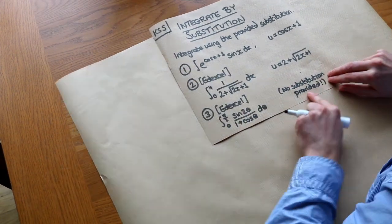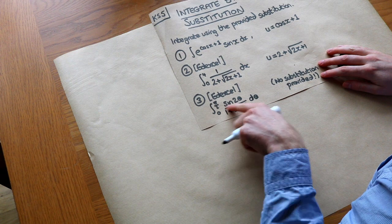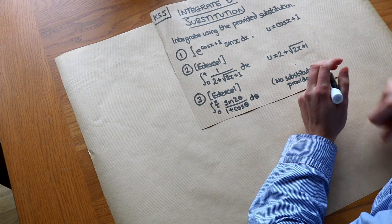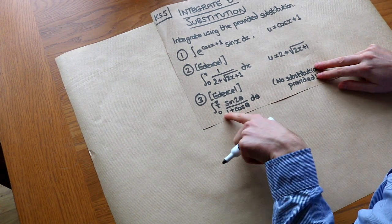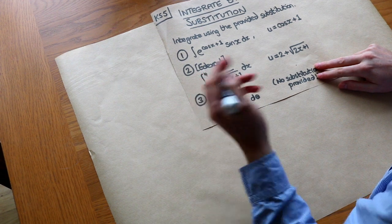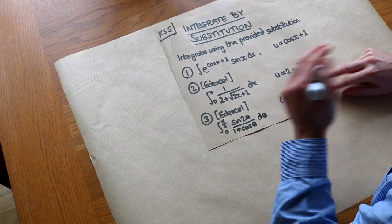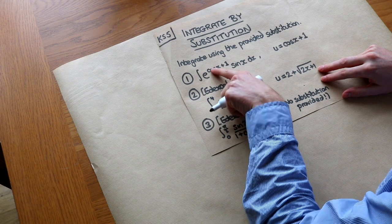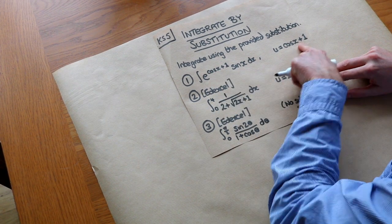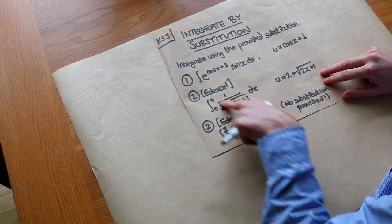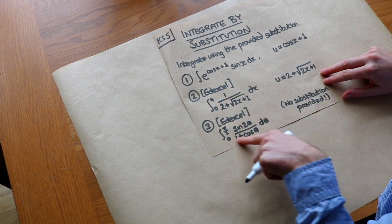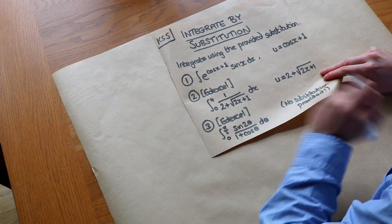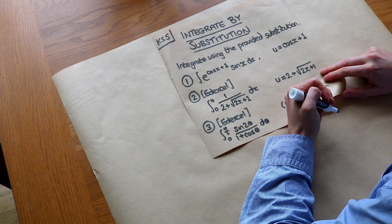For the final problem we're given no substitution: we have the integral of sin(2θ) over (1 plus cos θ). In general, if you have a denominator consisting of multiple terms added or subtracted, make the substitution that denominator. If you have a power expression, substitute whatever's in the power. If there's an expression under a square root, substitute whatever is under it. There is some degree of trial and error.